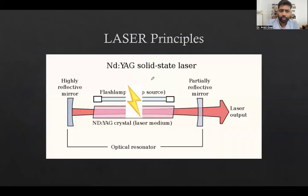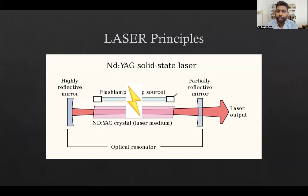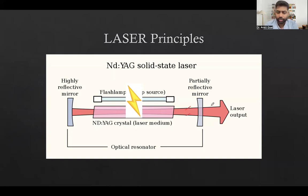Looking at this standard diagram, you can see the reflective mirrors and the energy source activating the laser medium to release photons. This energy is then delivered from an aperture outside as the laser output. The diagram looks straightforward once you have understood the mechanism.